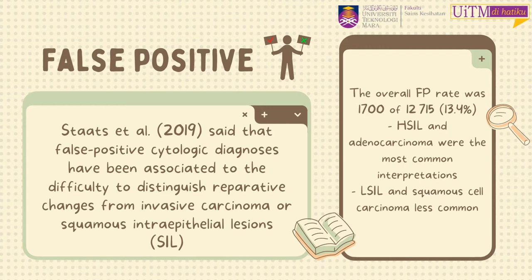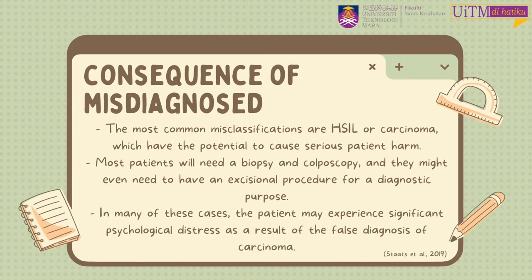In the study mentioned, the overall false positive rate was 1,700 of 13,715, equivalent to 13.4%. Among the false positive diagnoses, high-SIL and adenocarcinoma were the most common interpretations, while low-SIL and squamous cell carcinoma were less common. Since misclassification is most commonly high-SIL or carcinoma, this can potentially result in significant patient harm — most patients will require colposcopy and biopsy and could even undergo a diagnostic excisional procedure. Many of these cases receive a false diagnosis of carcinoma, which could result in substantial psychological distress to the patient.